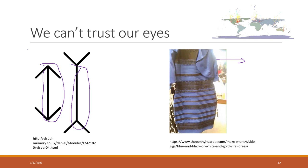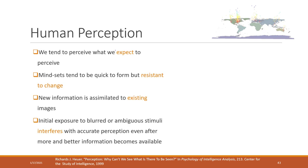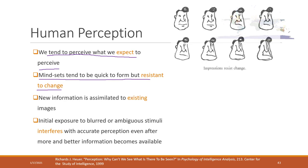There are very great readings posted on Canvas talking about human perceptions. For example, we tend to perceive what we want to perceive. Also, mindsets tend to be quick to form but resistant to change. Those are some features about human perceptions.